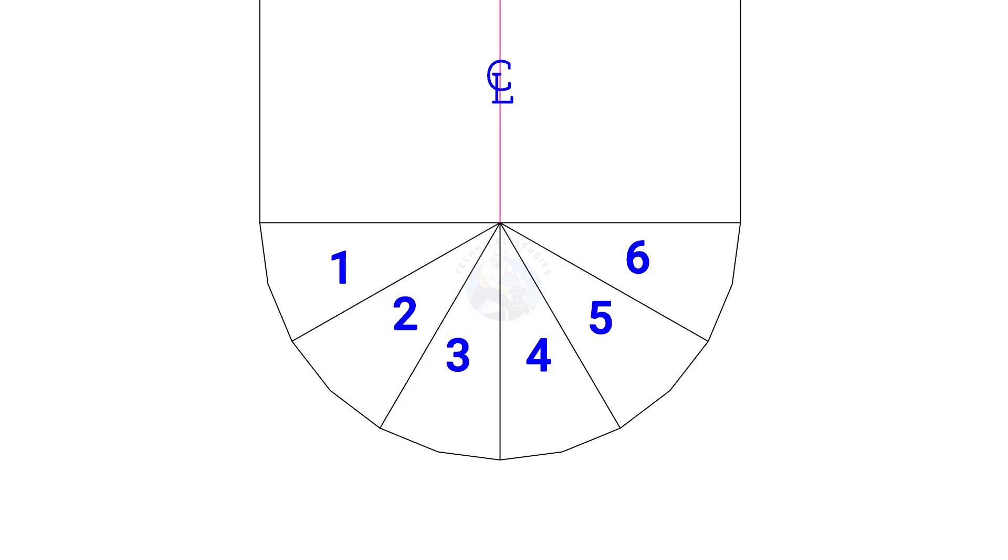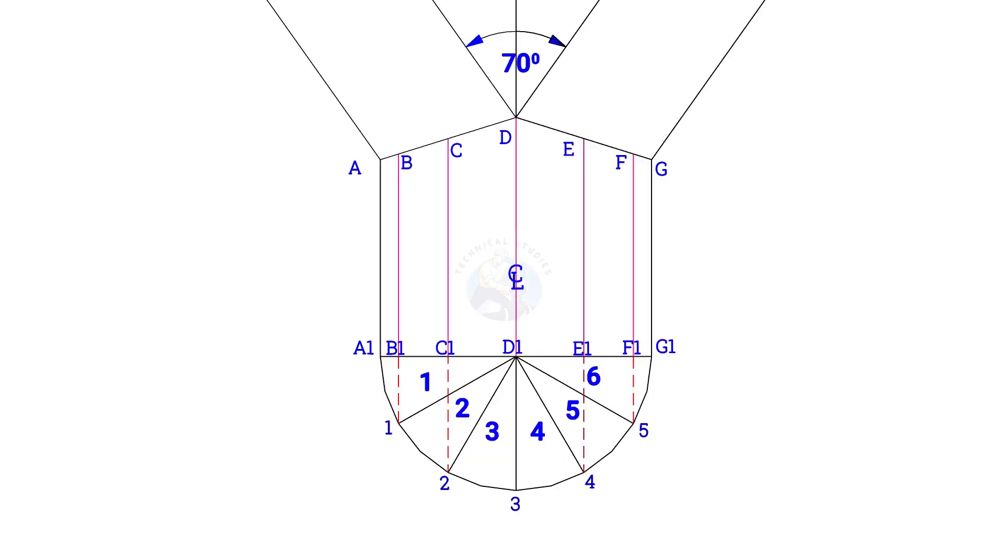Divide the half circle into 6 equal parts. Draw perpendicular lines from points 1, 2, 3 etc. Note down the measurements A, A1, B, E, B1, C, C1 etc.